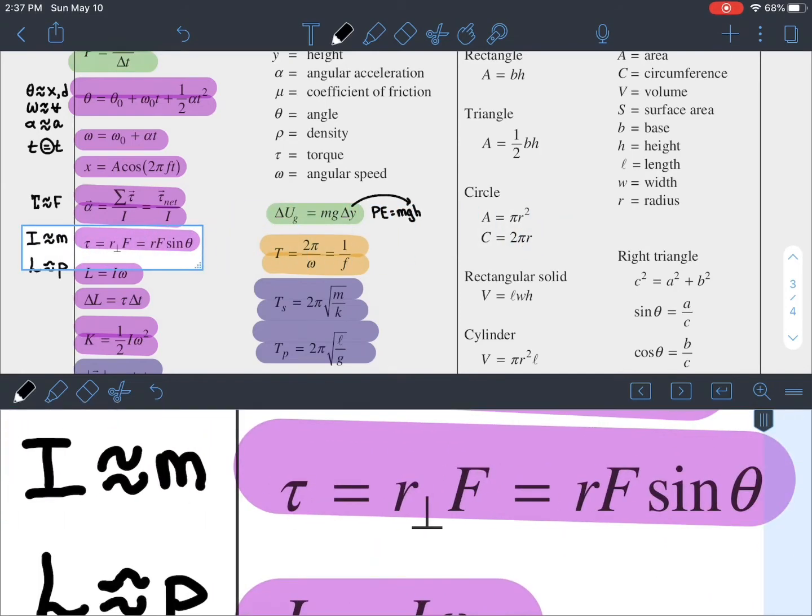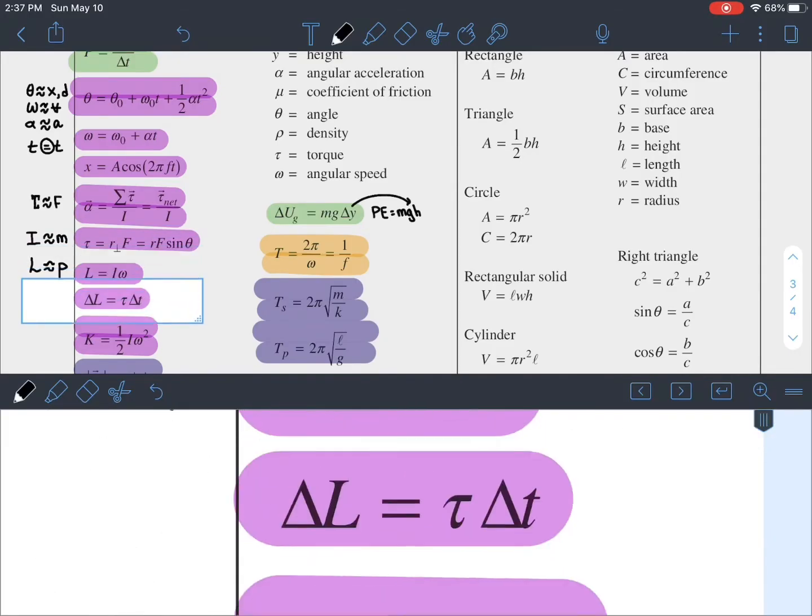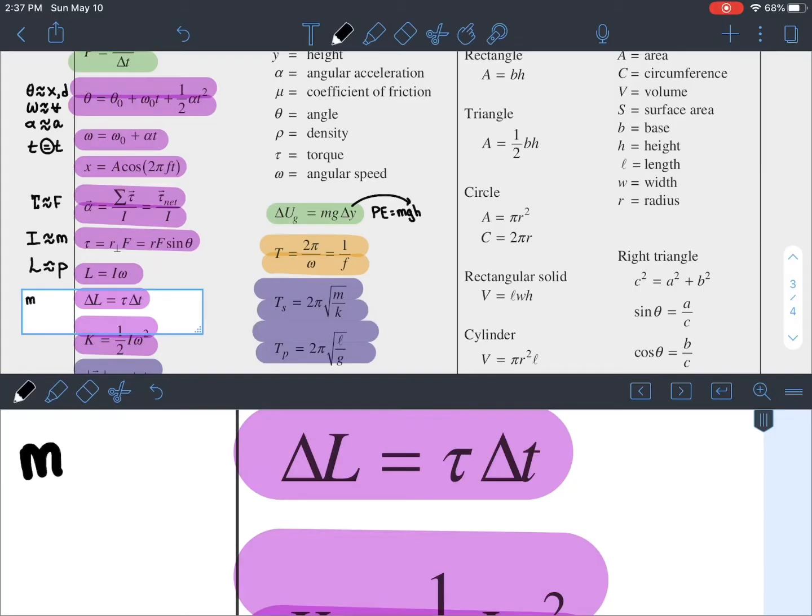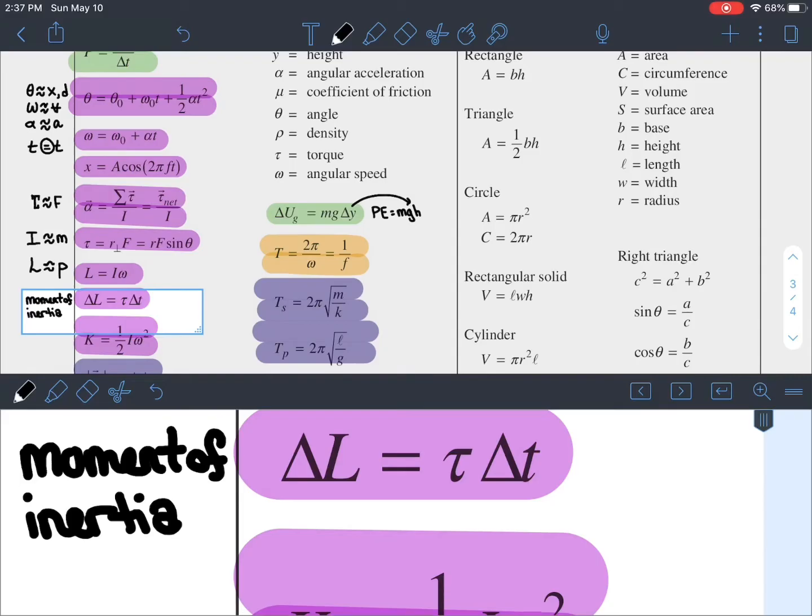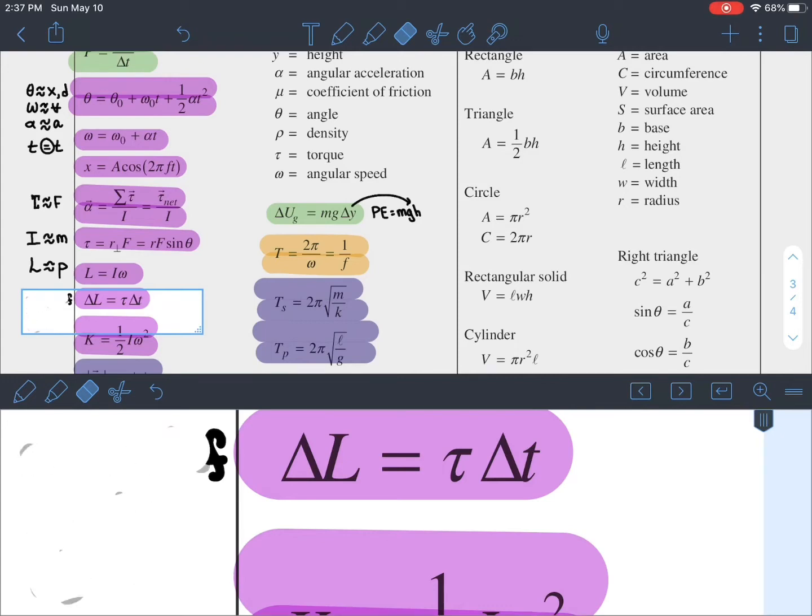The final thing to note here is that moment of inertia. You won't have a table on you, but they might ask you or they might give you, for example, they might say in the problem, the moment of inertia is MR cubed or something like that. In which case, you would just put MR cubed in instead of I. The moment of inertia is based on the shape.